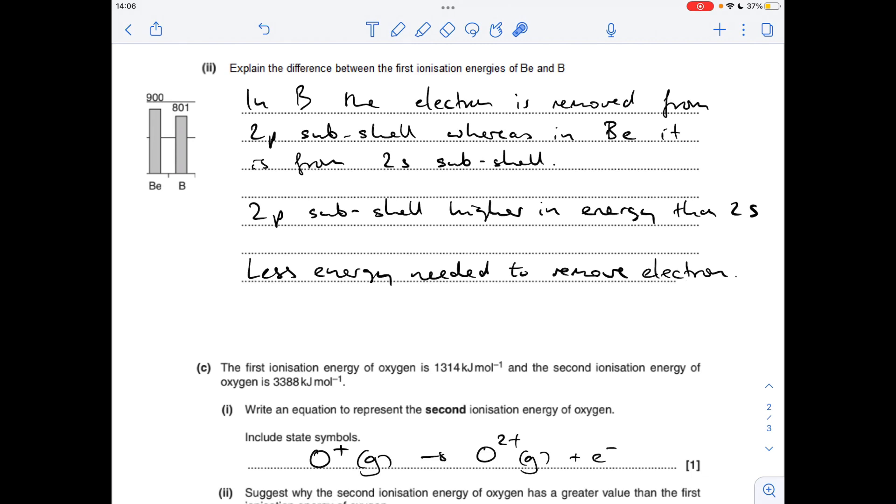For the equation for the second ionisation energy of oxygen, we're going from the O+ ion in gaseous form to the O2+ ion, again in gaseous form. Remember, the state symbol for all ionisation energy equations is always g.